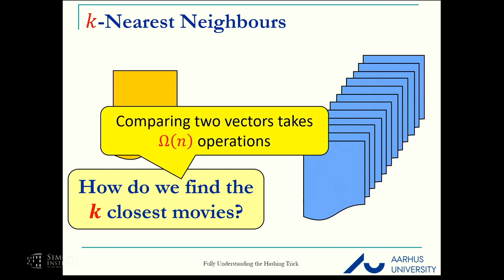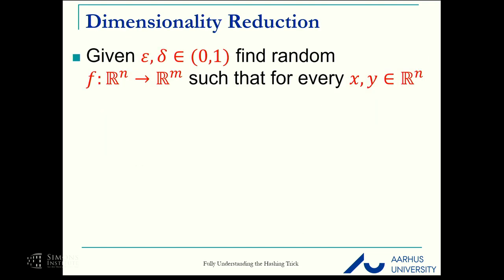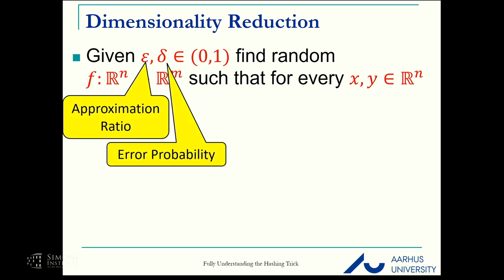Suppose now Netflix purchases the rights for a new movie, then we need to find the k closest movies to it. That's the k nearest neighbors problem. Comparing two vectors, the L2 distance, takes linear time. So how can we make this easier?